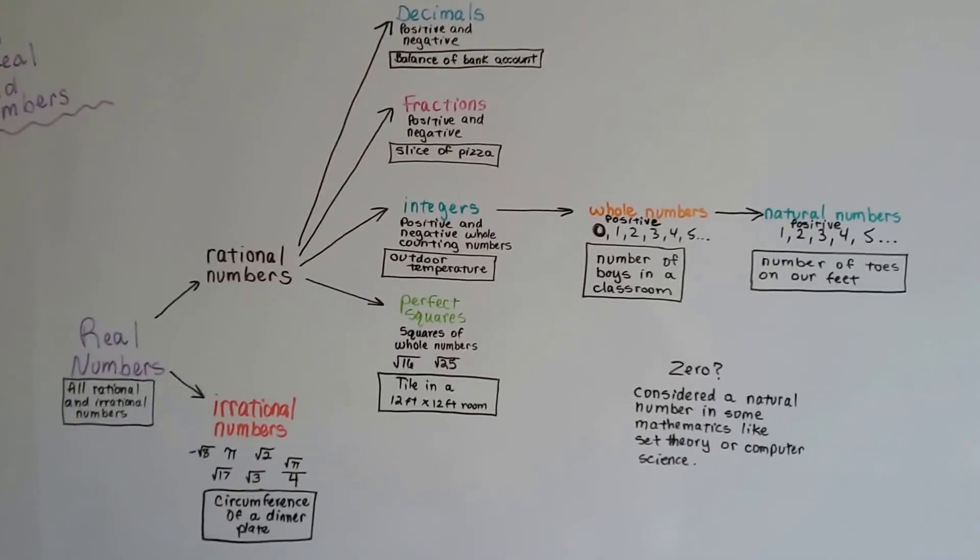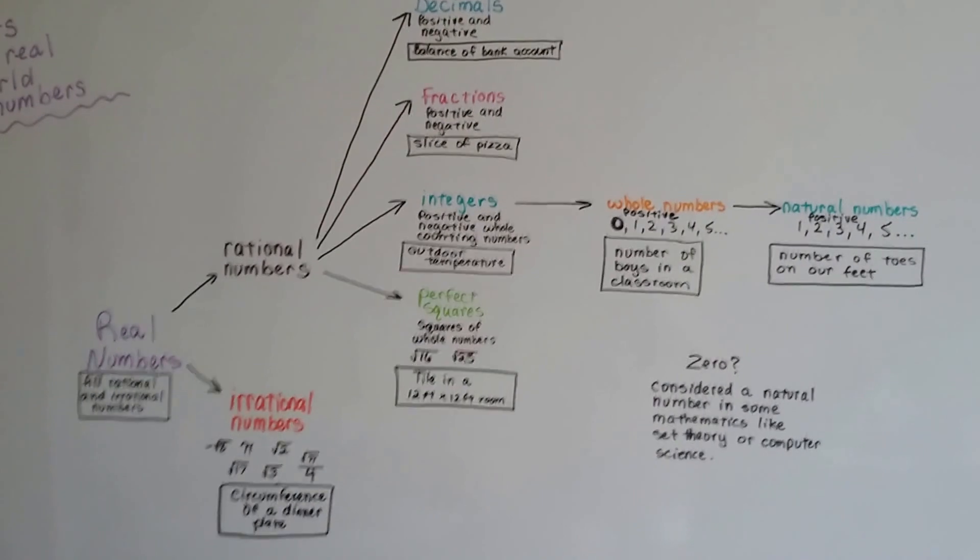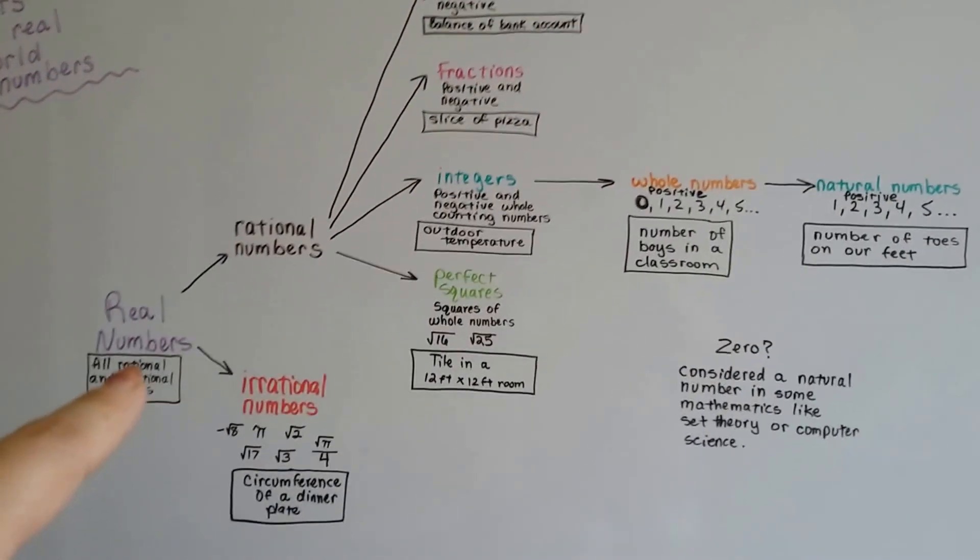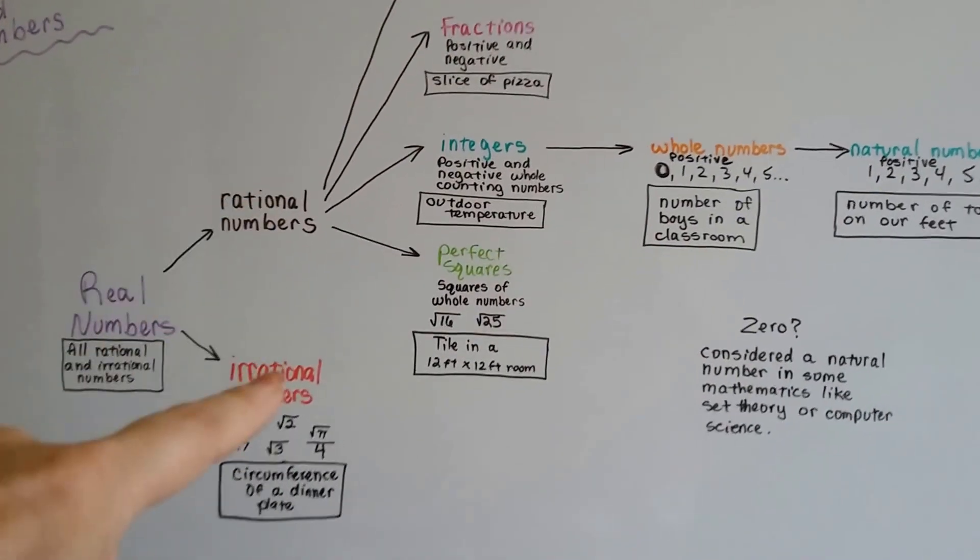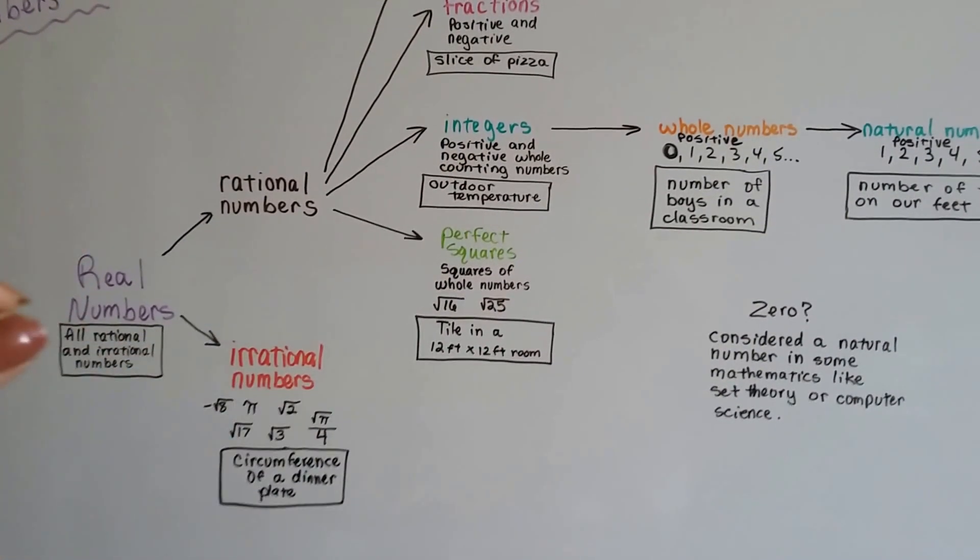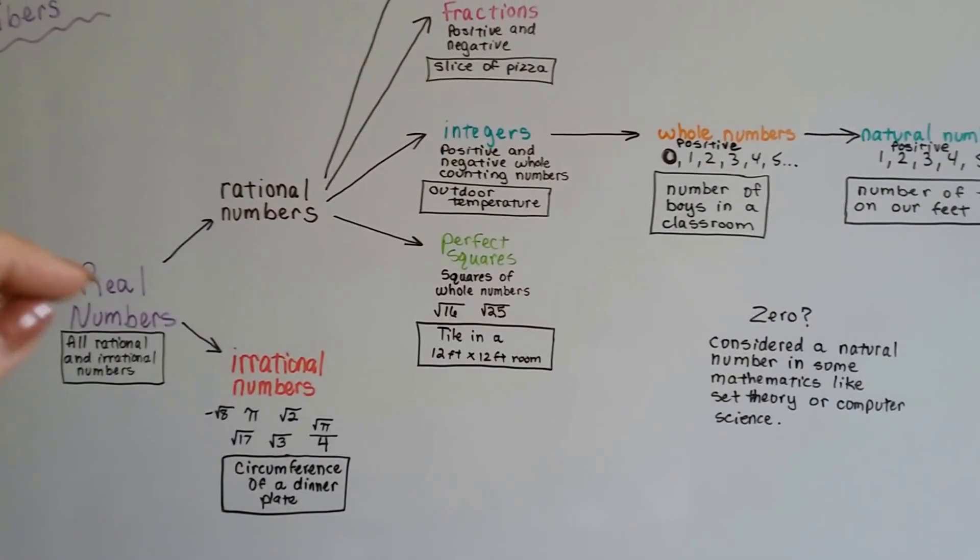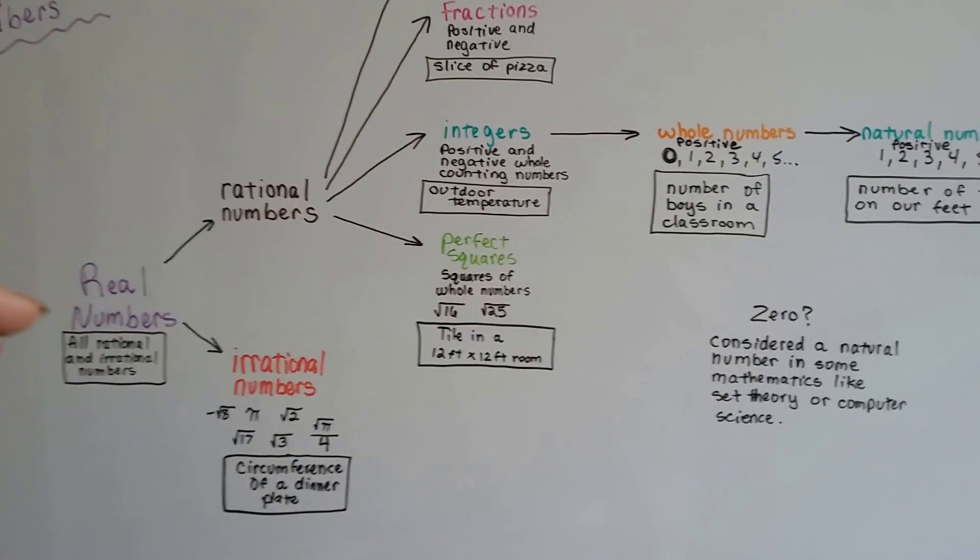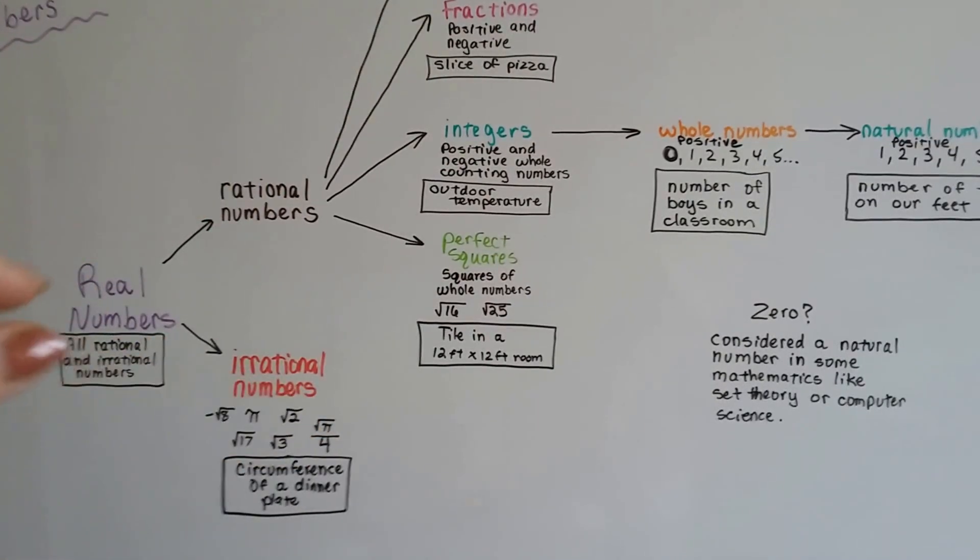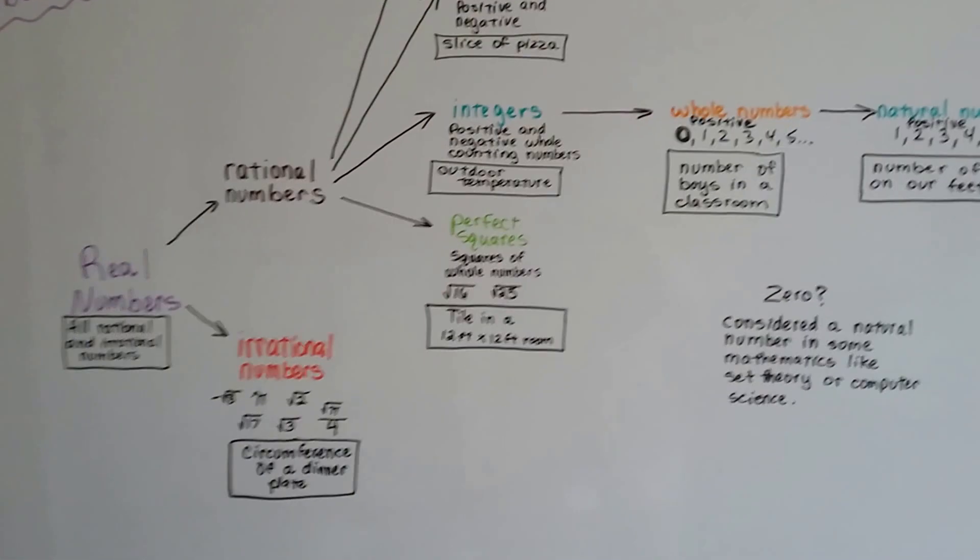So we're going to start with the beginning of our tree here with real numbers. As you can see, real numbers break up either into rational or irrational numbers. The real numbers is the root of the tree, the trunk of the tree. That's where the first two branches come off, rational or irrational.